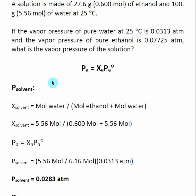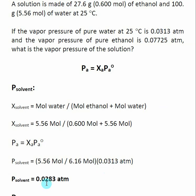We want to find the vapor pressure of the solvent in the solution after it's been mixed. We need to find the mole fraction of our solvent, which is equal to the moles of water divided by the total number of moles — moles of ethanol plus moles of water. The mole fraction of the solvent times the vapor pressure of pure water, which is 0.0313 atm, gives us the vapor pressure of the solvent in our solution.